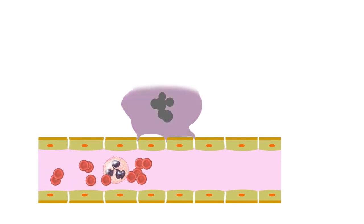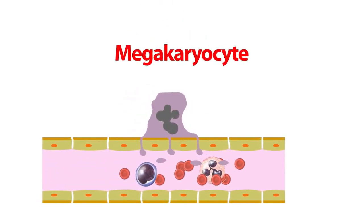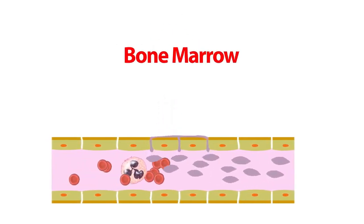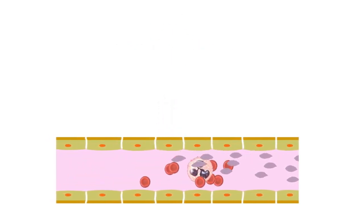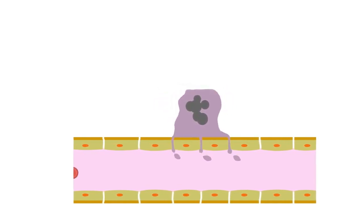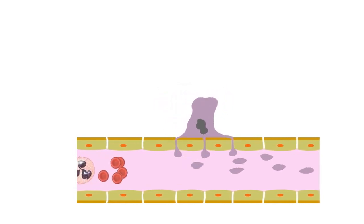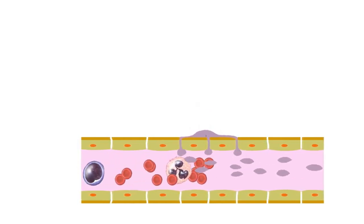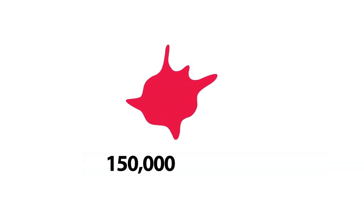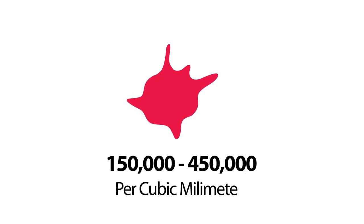Platelets are not actually cells. Rather, they are fragments of a larger cell called the megakaryocyte, which is produced in the bone marrow. After production, megakaryocytes converge towards the circulatory system, but due to their larger size they cannot directly cross the endothelial gaps. So they send cellular projections through the endothelial gaps, and as these projections contact the blood, they become fragmented due to the force of blood flow. The normal platelet count is around 150,000 to 450,000 per cubic millimetre of blood.